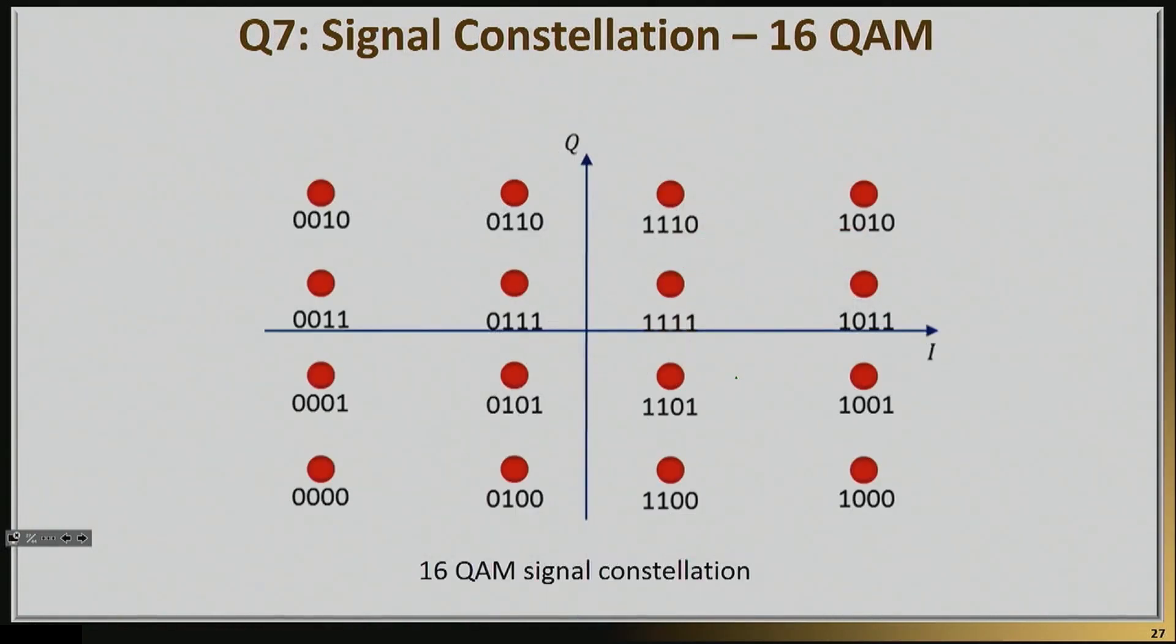And we show you a few other images. This is a signal constellation diagram from another scheme called Quadrature Amplitude Modulation, or 16QAM in this case, where I'm basically transmitting 4 bits per symbol, so now clearly I need 16 different symbols, and I basically arrange them in that square.